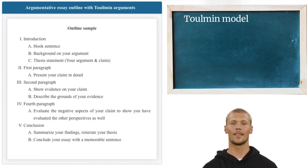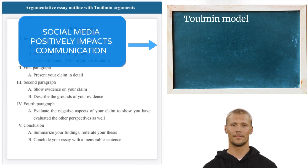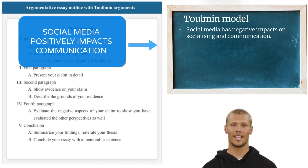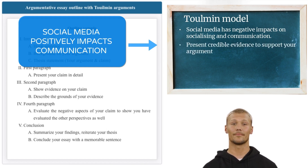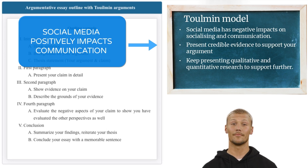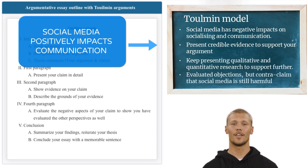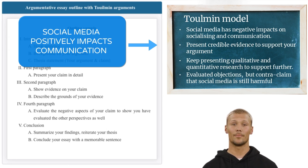Say our topic is that social media negatively impacts communication and you're using the Toulmin Argument. In your essay, you first argue that social media has negative impacts on socializing and traditional communication. Then you present credible evidence to support your argument. After that, keep presenting qualitative and quantitative research to support further. And finally, you show that you've evaluated objections from those who believe social media is useful, but still counter-claim to convince the reader that social media is still harmful. With the Toulmin model, you gradually support your claim by considering the objections, generally in your last paragraph.